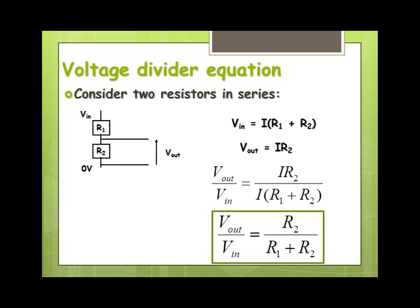So V_out over V_in equals R2 over (R1 + R2). What's important to note is that V_out always corresponds to the resistance placed on top of the equation. So if we wanted to find the voltage over R1, we'd put R1 on top, and V_out would then be measured across R1.